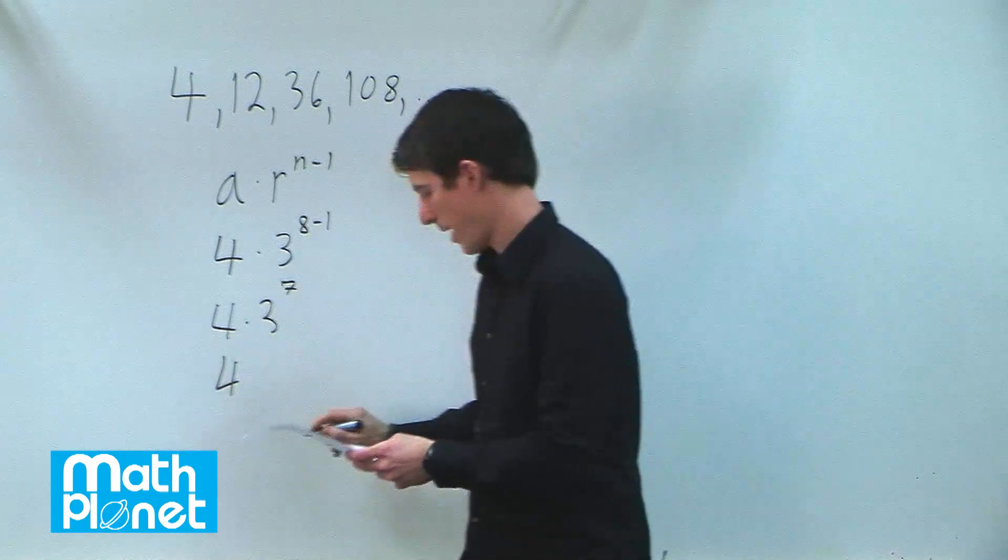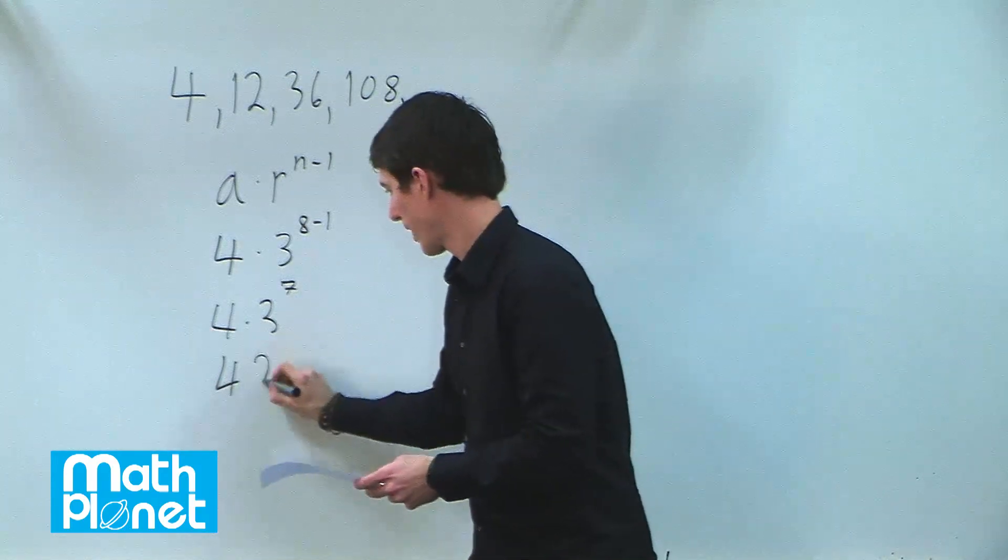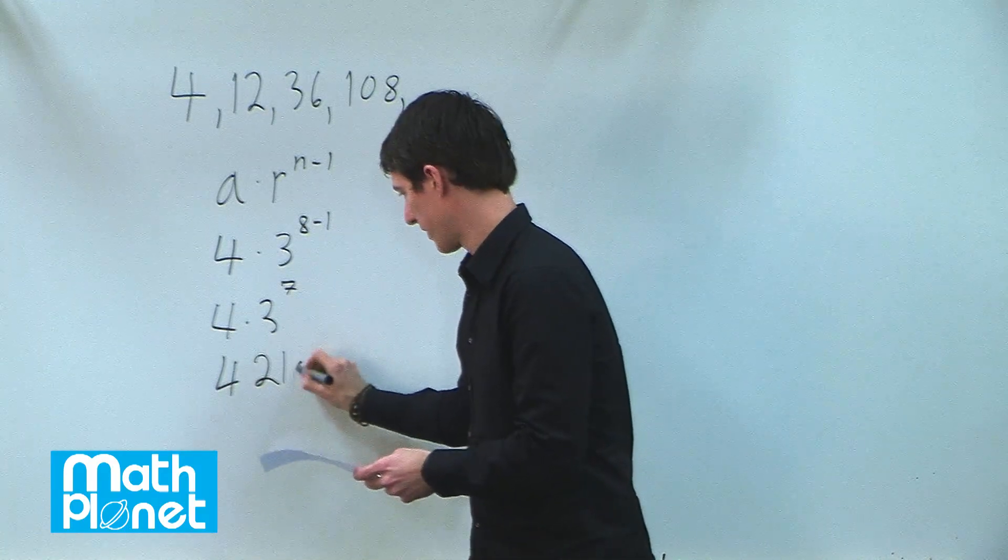This reduces to 4 times 3 to the 8 minus 1 is 7. Then we have 4 times 3 to the power of 7, which is 2,187.